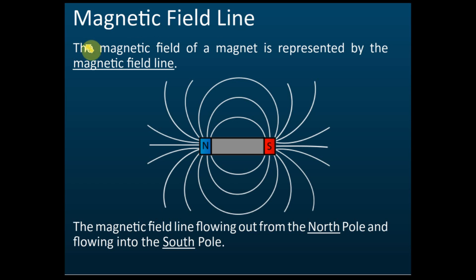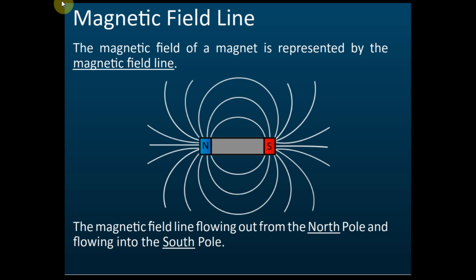The magnetic field of a magnet is represented by magnetic field lines. We use field lines to represent a magnetic field. This magnetic field is not static — we call it a magnetic flux, a flow of magnetic flux. Since it's a flow, it must come out from a certain place and go into another place, meaning it has directions. The magnetic field line has directions, going from the north pole.